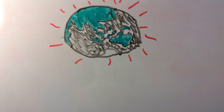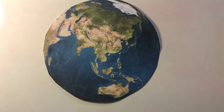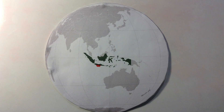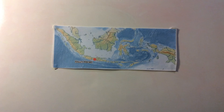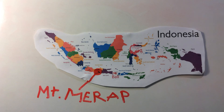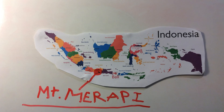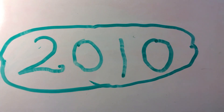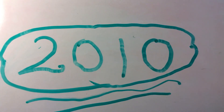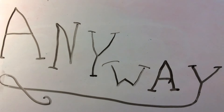Mount Merapi is found on the Isle of Java, Indonesia, Asia. As you can see here, here and here. The eruption at hand happened on the 25th to the 26th of October 2010, and there were three eruptions in total.